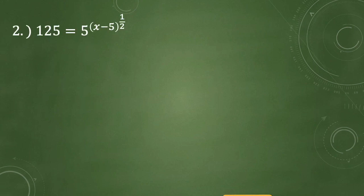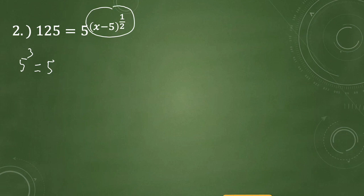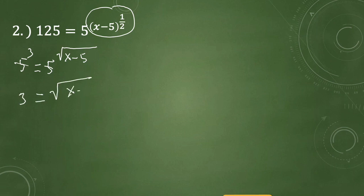For number 2, we have 125 equals 5 raised to x minus 5 raised to 1 half. Let's express 125 as 5 raised to the third power. Then we convert the exponent 1 half into radical form: instead of x minus 5 raised to 1 half, we write the square root of x minus 5. Since we have the same base, we drop 5 and are left with the exponent 3 equals the square root of x minus 5.